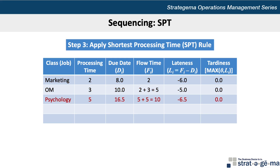However, the next assignment with the shortest time to complete is the psychology assignment at 5 hours, making the flow time now 10 hours and the lateness negative 6.5, which results in 0 tardiness. At this point, the longest assignment would be completed last, and that's the finance assignment at 6 hours. The flow time is now 16 hours, and the lateness is positive 3, since the 16-hour flow time means the assignments would be completed at 16 hours past midnight, but the finance assignment is due at 13 hours past midnight. This makes the tardiness now 3 hours. The average flow time is 8.25 hours, the lateness negative 3.64 hours, and the tardiness 0.75 hours.